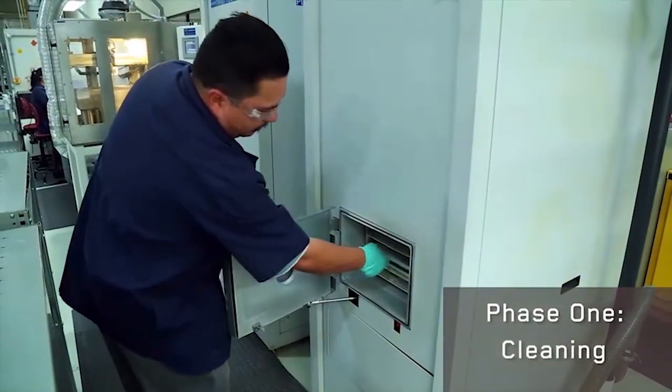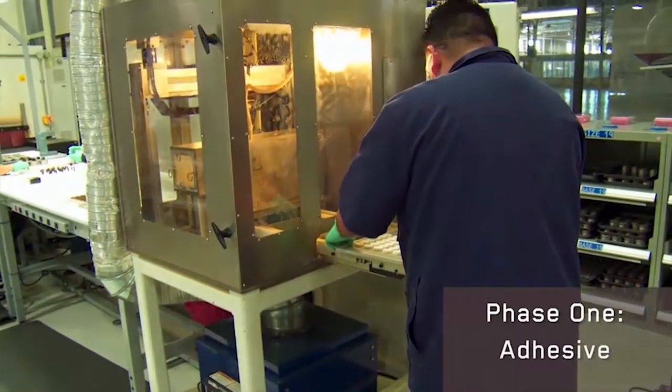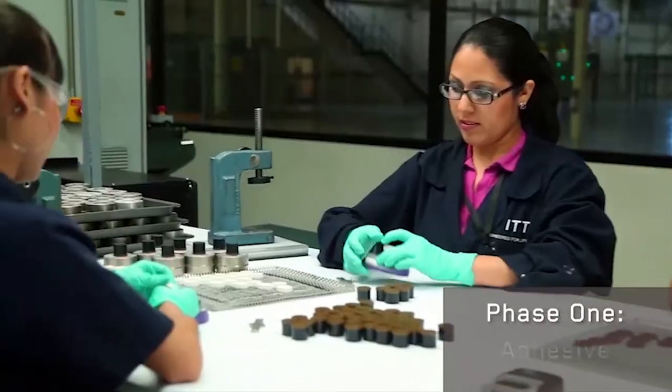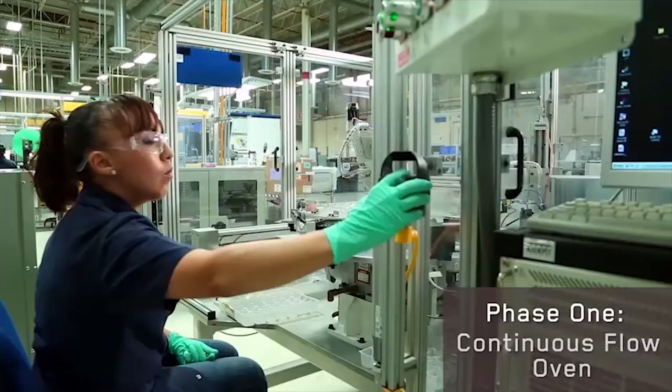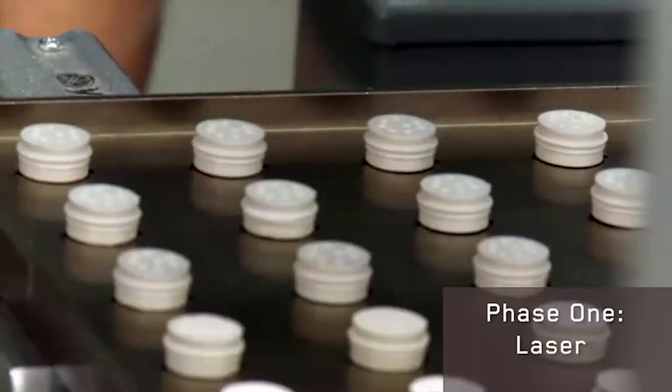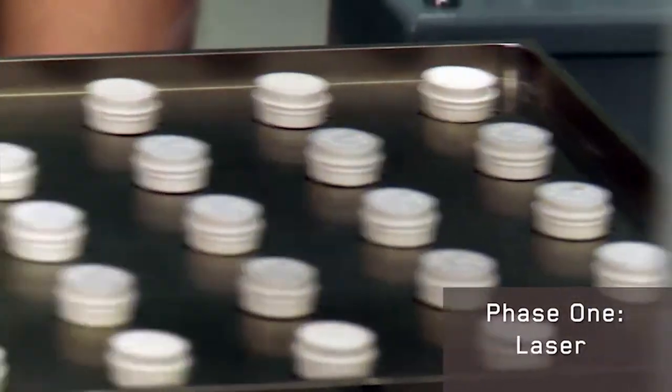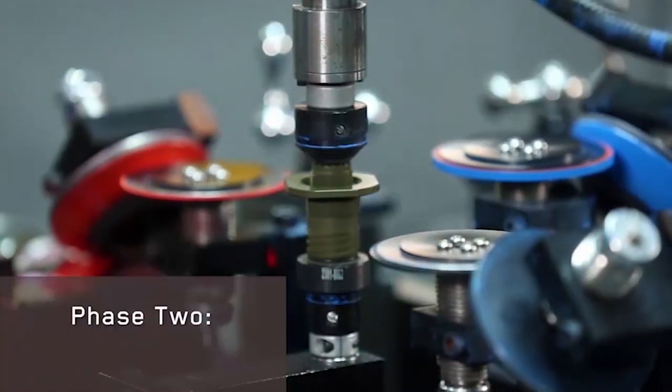Then we have plasma to clean up the parts. We add adhesive. Then we use a continuous flow oven to cure the parts. Finally, we laser mark the parts to complete bonding and insulation. The next phase of the process is assembly.